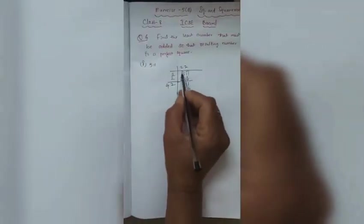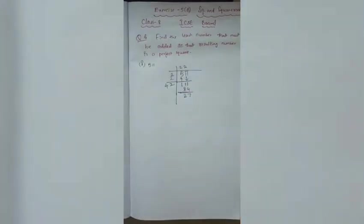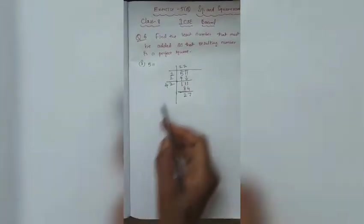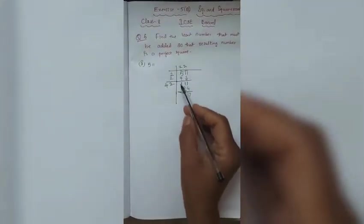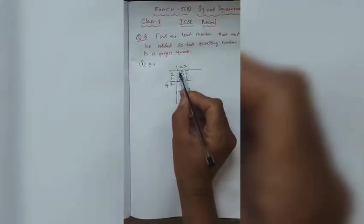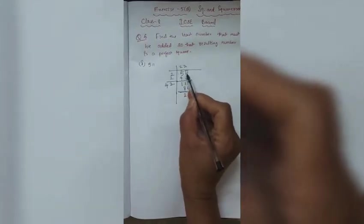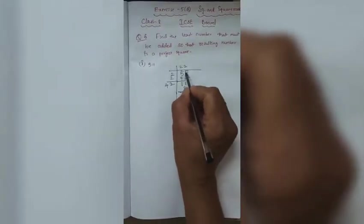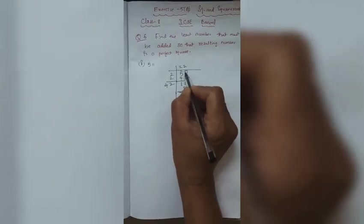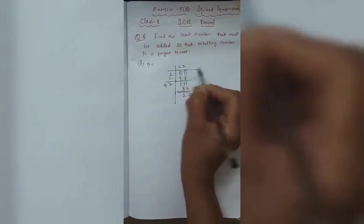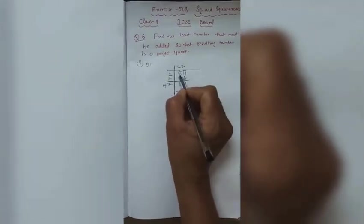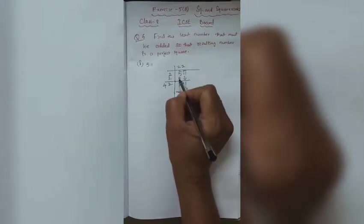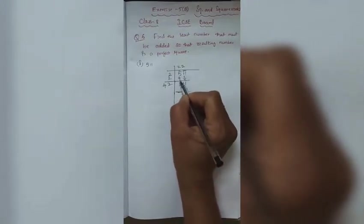The number is 511. We have to find what number should be added to 511 so that it gives us a perfect square. We start by placing the bar over two digits from the right side. The nearest perfect square for 5 is 2, since 2² = 4, and 5 minus 4 is 1.